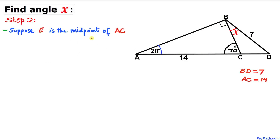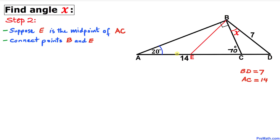Here's our next step. Let's assume that E is the midpoint of line segment AC, so E is somewhere here on AC. Now let's go ahead and connect points B and E. Here's our much nicer looking diagram.